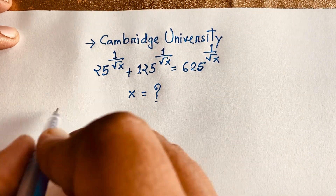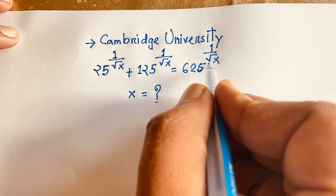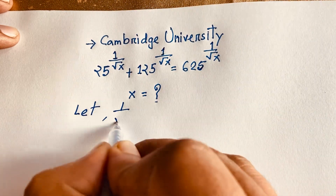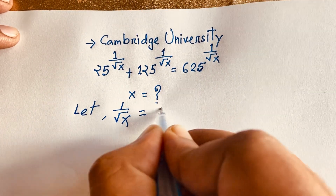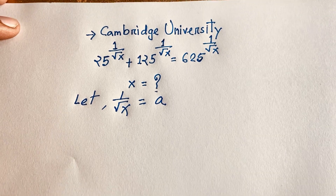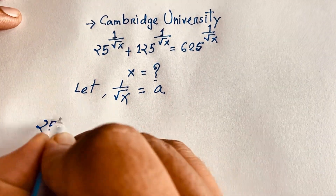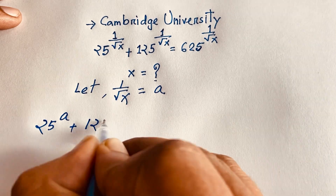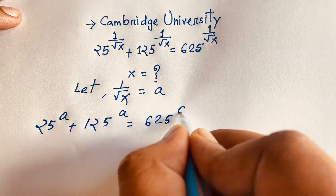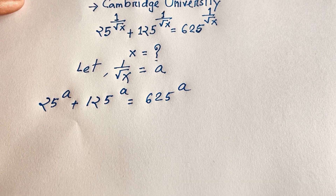Our exponential equation will be 25 to the power (1 over x). Look, here is 1 over x, 1 over x, 1 over x. So, let 1 over square root x equal to a. So, I can easily write: 25 to the power a plus 125 to the power a is equal to 625 to the power a, because we let 1 over square root x equal to a.